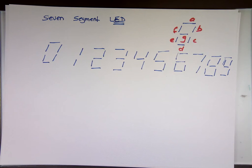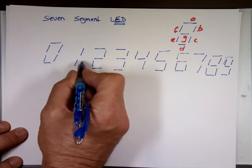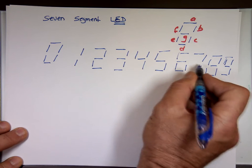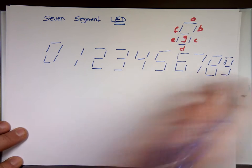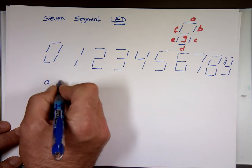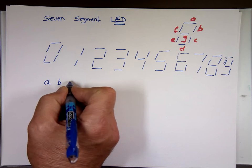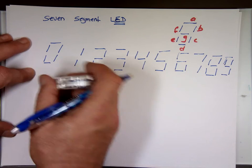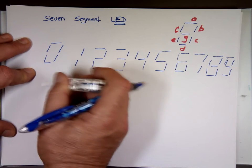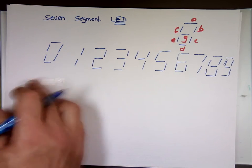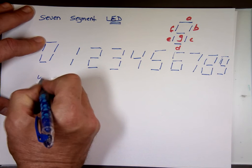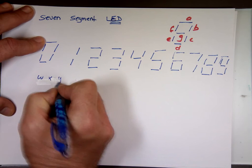Here we go. So we should have one, two, three, four, five, six, seven, eight, nine, ten different outputs. So I'm going to have four letters to control that. Let's use W, X, Y, and Z. These are my inputs. W, X, Y, and Z.